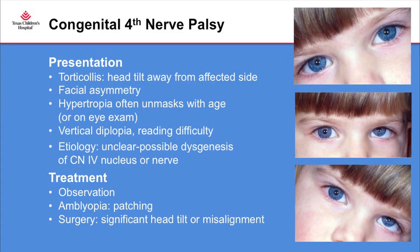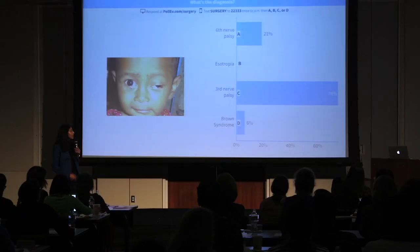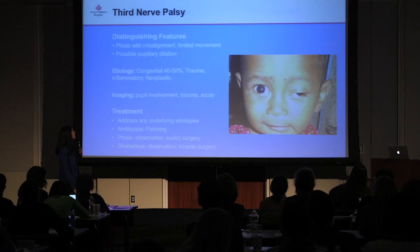We recommend observation if the baby is able to control the alignment well. If there's amblyopia, patching is indicated. If there's a significant head tilt or misalignment like this patient has, we recommend surgery.